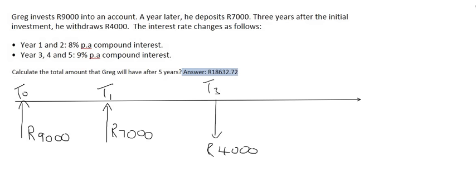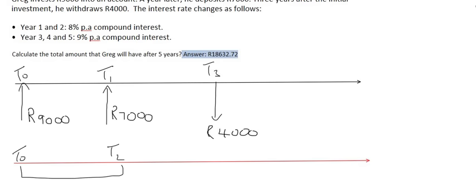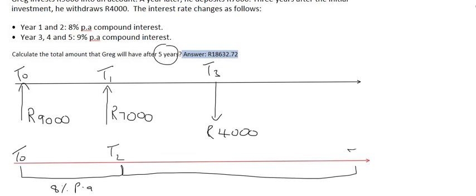Now we're going to do a separate timeline which will show us the interest rate changes. The interest rate changes are given in bullet point form. For years one and two - from the very beginning to the end of year two - the interest rate is going to be 8%, so from t0 up to t2 the interest rate is 8% per annum. Then for years three, four and five, right until the very end at t5, it will be an interest rate of 9%.